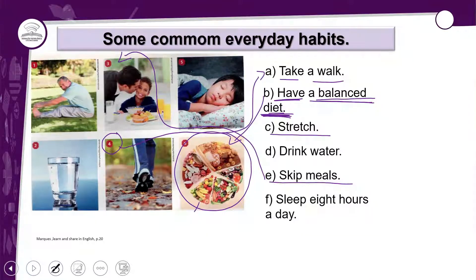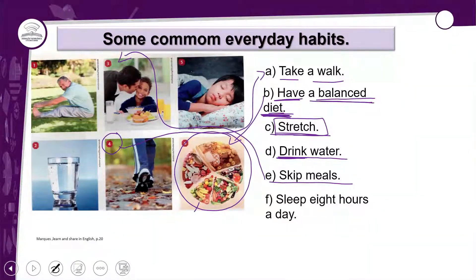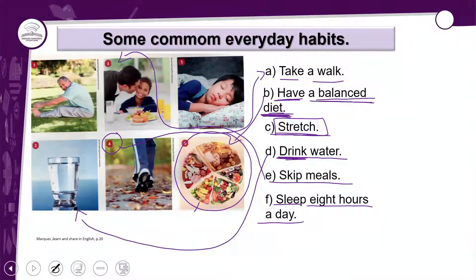Vamos à letra C: 'Stretch'. Eu acho que vocês não sabem essa palavra — não é muito comum. Vamos deixar para depois. Na letra D: 'Drink water' — beber água. O verbo 'drink' fácil de relacionar à imagem 2. Sobrou a letra F: 'Sleep eight hours a day' — dormir oito horas por dia — que é a imagem 5.